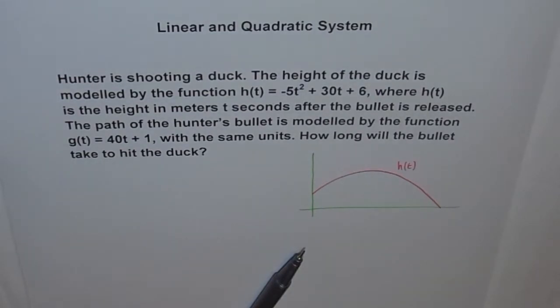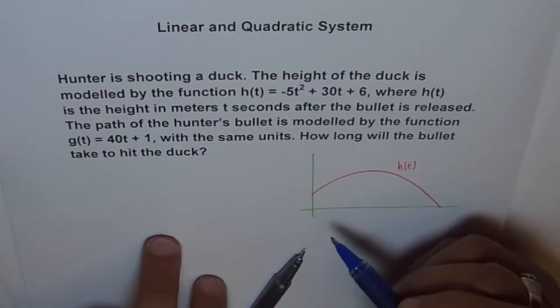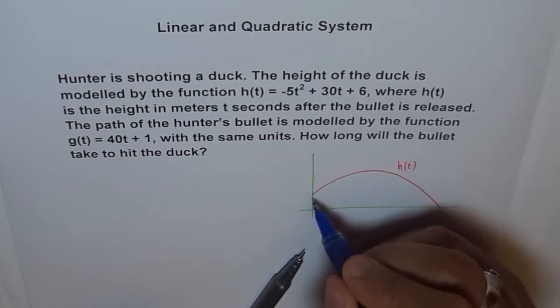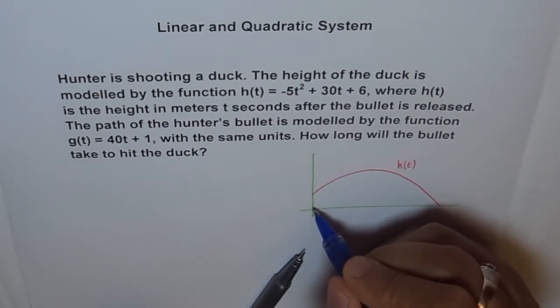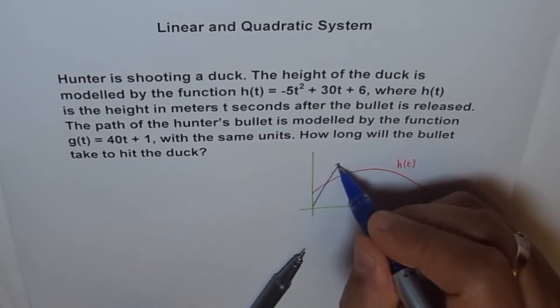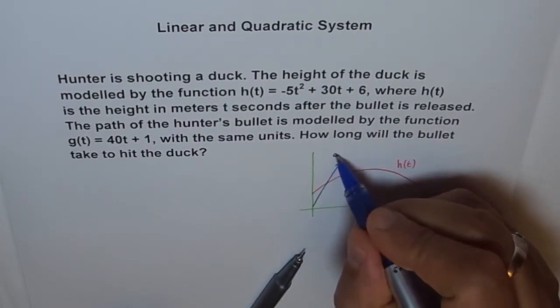And now let me draw the graph for the bullet. The bullet follows 40t + 1. So this was 6, and say 1 is here. And 40t is a very steep curve, so it will shoot like this. That's the bullet. We say g(t).